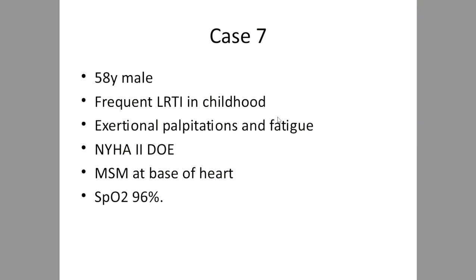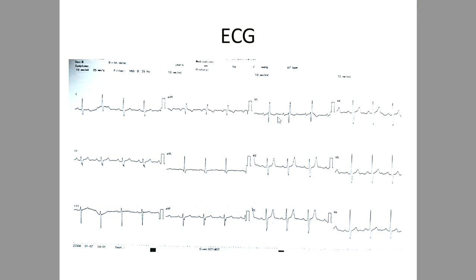Case: A 58-year-old man with exertional palpitations and fatigue, an ejection systolic murmur at the base of the heart, no desaturation. History suggests left-to-right shunt; exertional palpitations suggest chamber enlargement and fatigue suggests low cardiac output. ECG shows clear RV forces with right bundle branch block pattern. There is also a Q-wave in aVL suggesting a counterclockwise loop. In a left-to-right shunt with a counterclockwise loop, always think of ostium primum ASD, inlet VSD, or AV canal defect — in usual secundum ASD, the loop is typically clockwise. Clinical diagnosis should be ostium primum ASD.